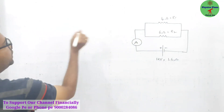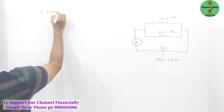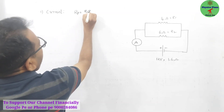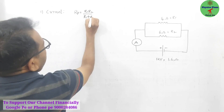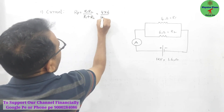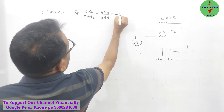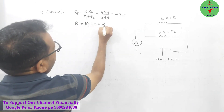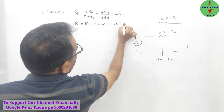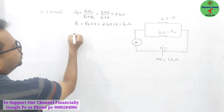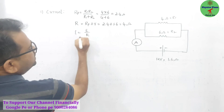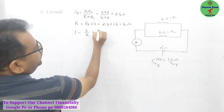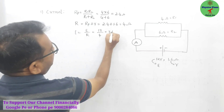Let us calculate. Here r1 and r2 are in parallel, so parallel resistance is r1 × r2 / (r1 + r2) = 4 × 6 / (4 + 6) = 2.4 ohm. Total resistance = 2.4 + 1.6 (internal resistance) = 4 ohm. Current = EMF / total resistance = 12 / 4 = 3 ampere.